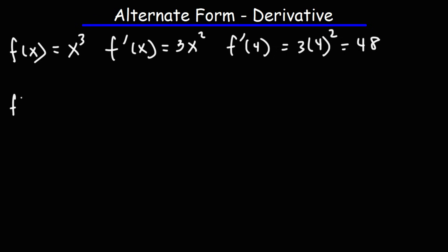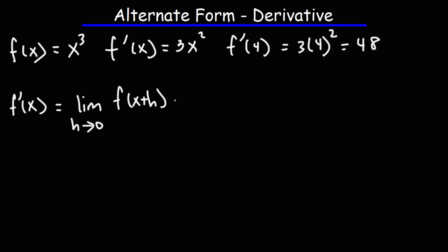We can find the derivative of the function using limits. So f prime of x is equal to the limit as h approaches 0 of f of x plus h minus f of x, divided by h. This is the limit definition of the derivative, and using this formula it will give us f prime of x is equal to 3x squared.